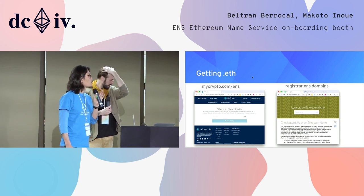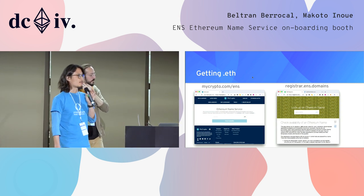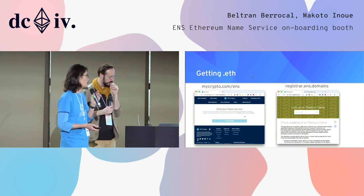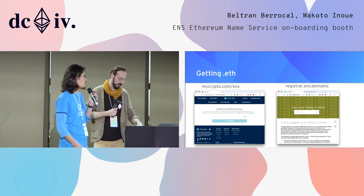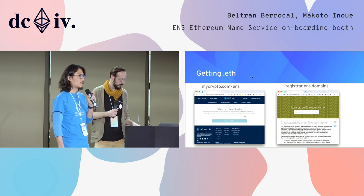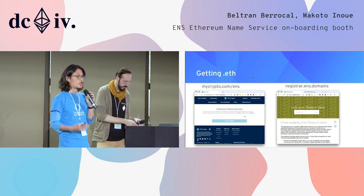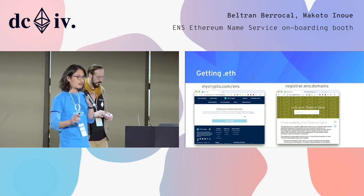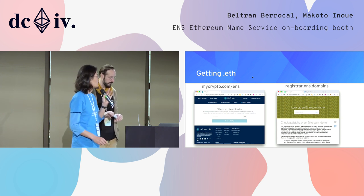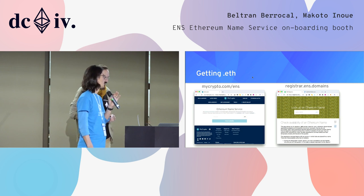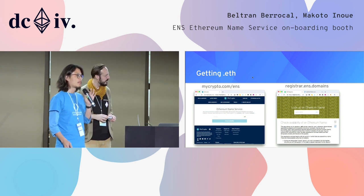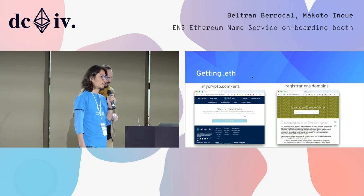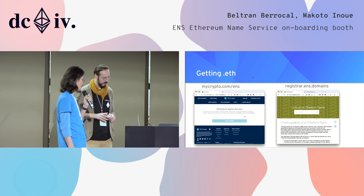The auction process is something we still haven't put into the new ENS manager. Currently there are a couple of options. One is to go to registrar.ens.domains — there's a large deprecation warning and there might be a few bugs, so hold a brave heart. Also, third-party services like MyCrypto and MyEtherWallet do have a similar auction process, so if you want to go that route, you can.